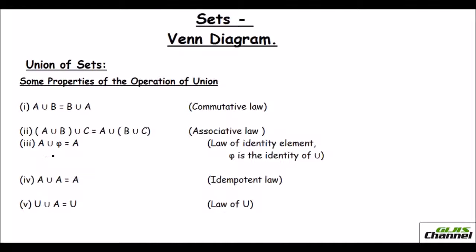A set union with an empty set will give you the set itself — that is the law of identity element; the empty set is the identity of union. A set union with itself gives the set itself; that is the idempotent law. And finally, universal set union set A is ultimately the universal set — that is the law of universal set.